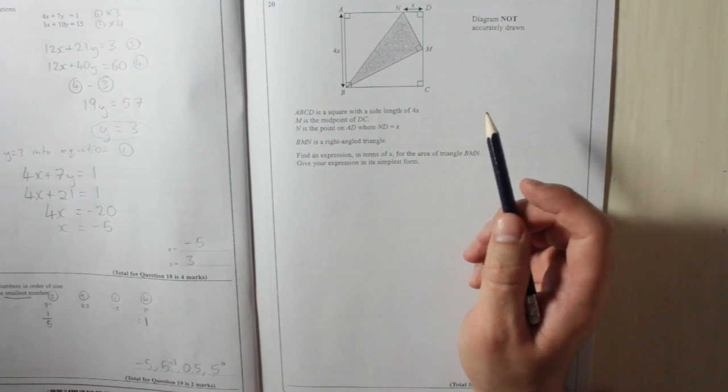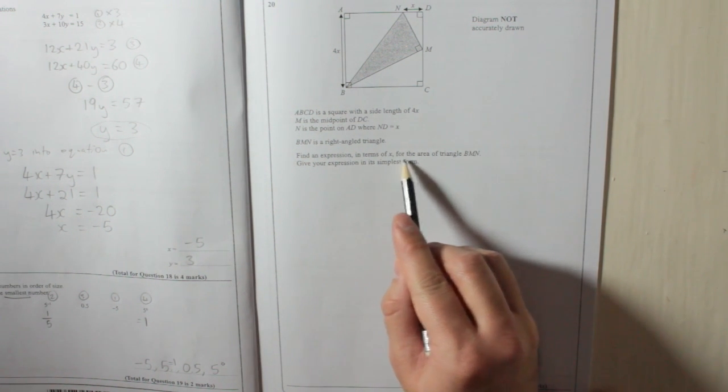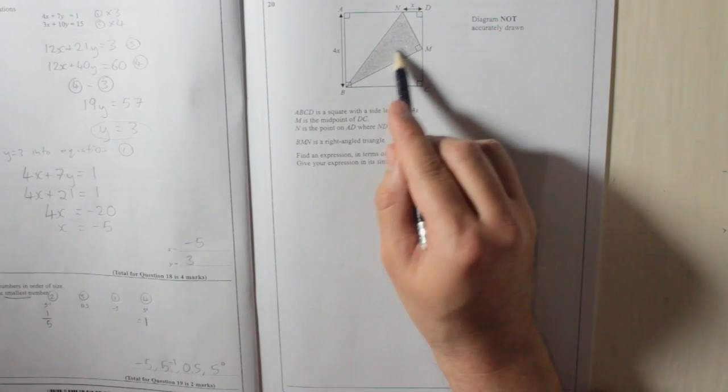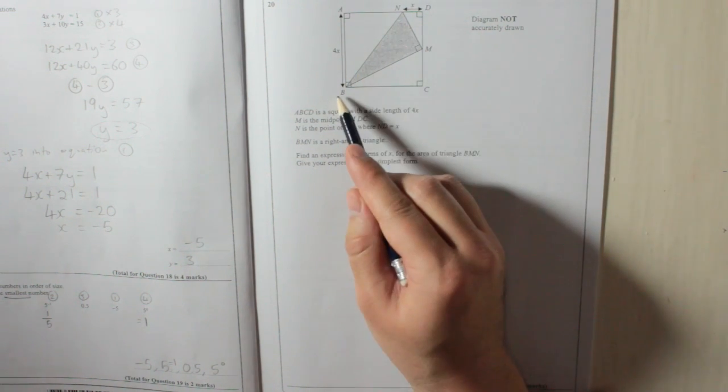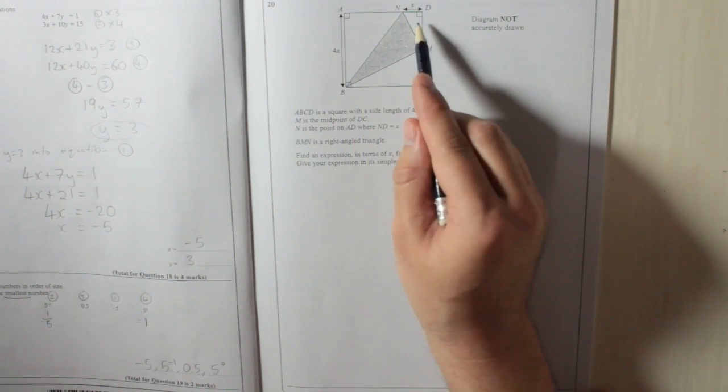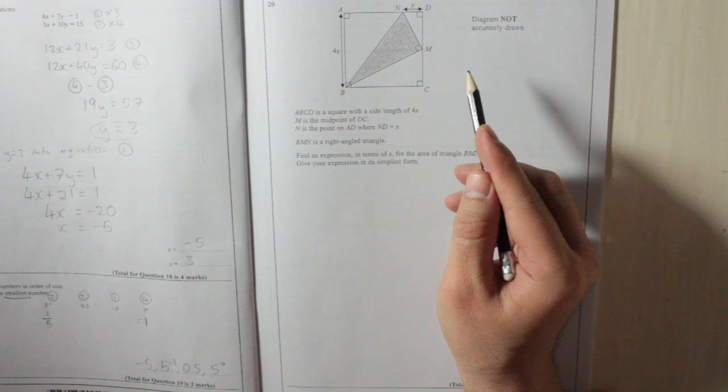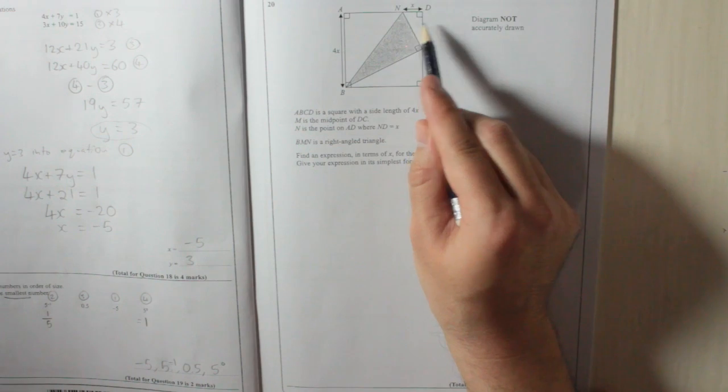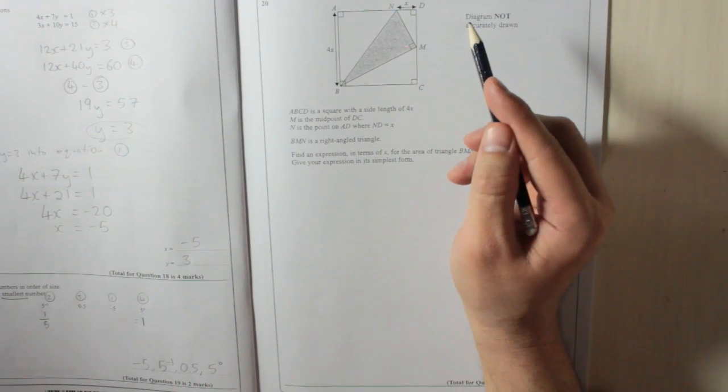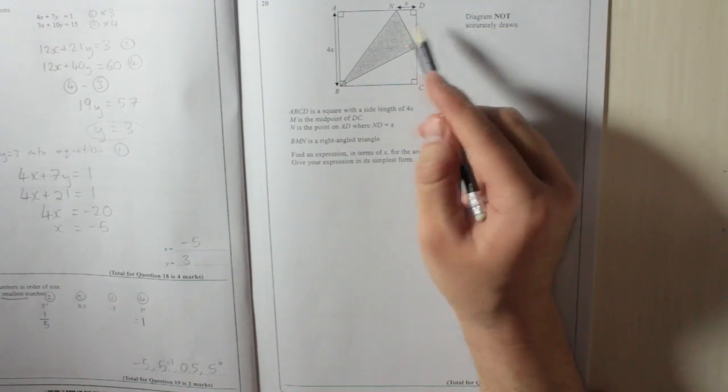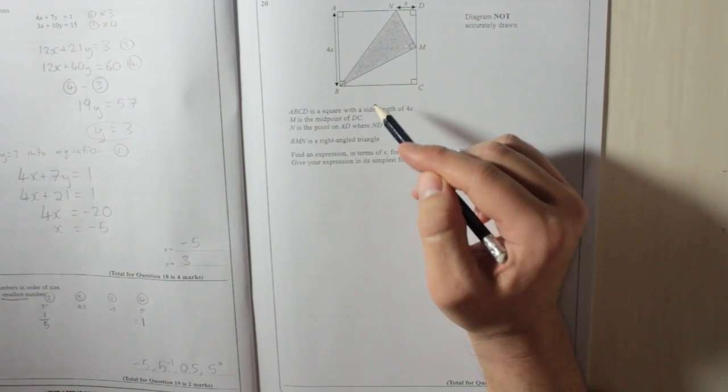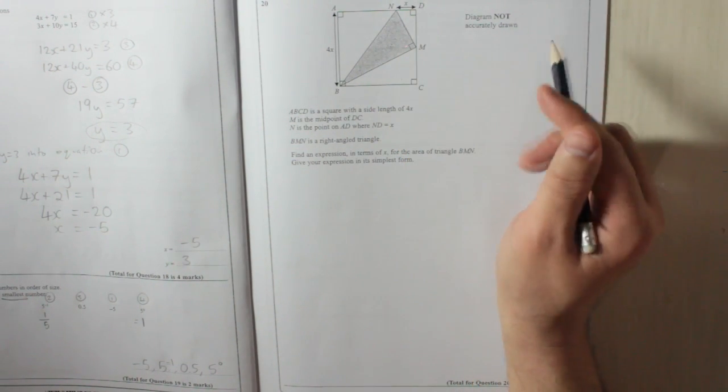Now, it wants an expression in terms of X for the area of triangle BMN. So you want this area here. Now, let's say you knew the entire area, and you knew the area of these white bits. It makes sense that to find the shaded bit, you'd have to take away these white bits from the entire area. So that's what we're going to have to work out.